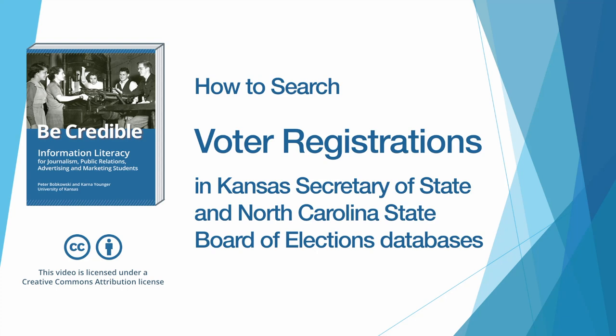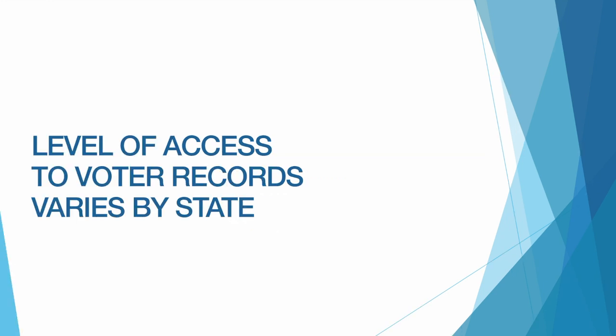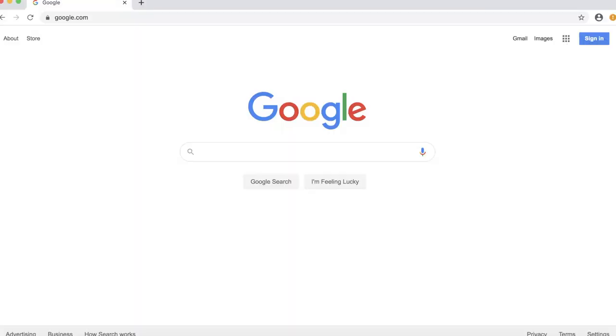This is a companion video to the Be Credible textbook on searching voter registration records, focusing on the records kept by the Kansas Secretary of State and by the North Carolina State Board of Elections. How easy or difficult it is to see an individual's voter registration depends on state law. In some states, we need minimal information about an individual to find his or her voting record, and in other states, the bar for accessing this information is a little higher. Let's compare the voting record databases in Kansas and in North Carolina.